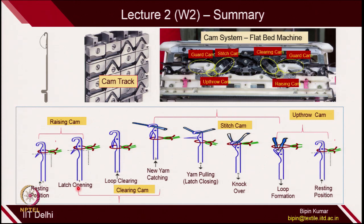How the positioning of raising cams on the cam jacket is important and synchronized, which helps the needle to perform certain movements to make the knitting successful. Raising cams help in latch opening. Clearing cam makes sure the old loop is knocked out and new yarns are caught. In the stitch cam, the needle goes in a downward movement, starts pulling the yarn, then the latch gets closed and the old loop is knocked out. Finally, the upthrow cam raises the needle again to the resting position.